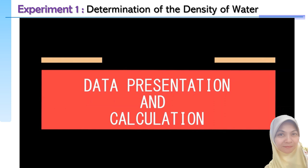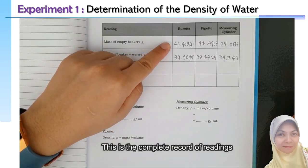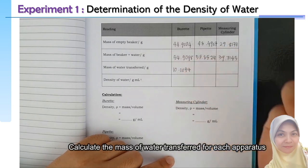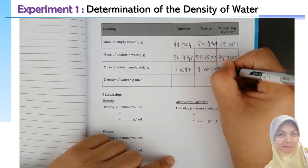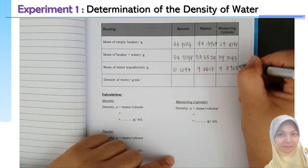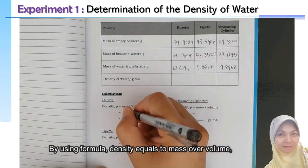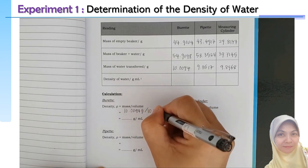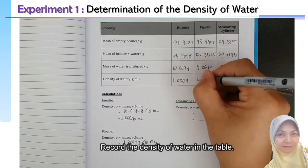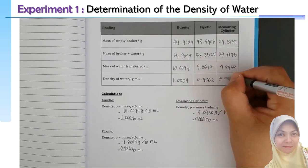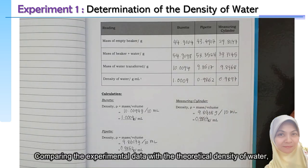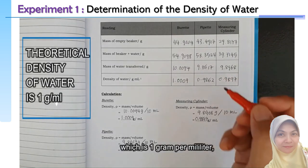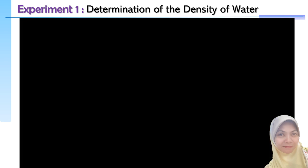Data presentation and calculation: this is the complete record of readings. Calculate the mass of water transferred for each apparatus. Using the formula density equals mass over volume, calculate the density of water for each apparatus and record the values in the table. Compare the experimental density values with the theoretical density of water, which is 1 gram per milliliter. The nearest value is 1.009. Conclusion.